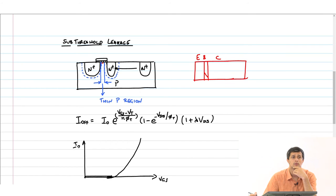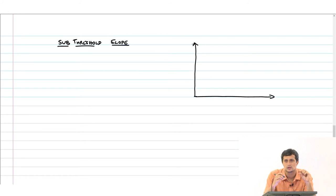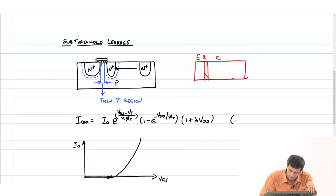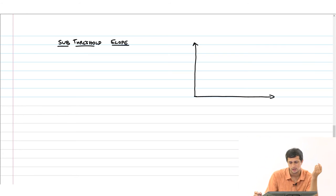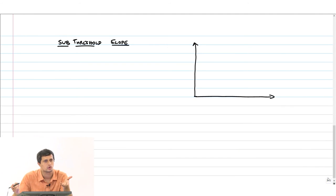First of all, if I want to look at the effect of subthreshold current, I cannot plot I_D versus V_GS because the magnitude of the current is going to be in nanoamperes. This subthreshold equation that we wrote typically will be somewhere in nanoamperes, but obviously everything appears in microamps if you are talking of on current. There are three orders of magnitude difference between on current and off current. Therefore, I cannot plot my I off on the linear scale and hope to analyze subthreshold leakage.